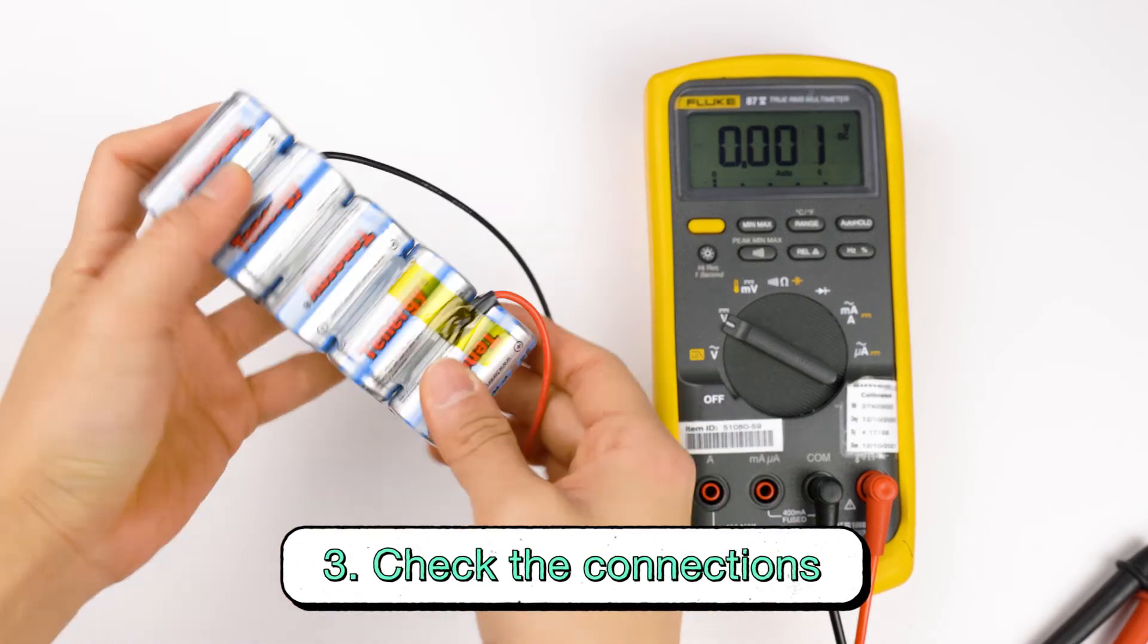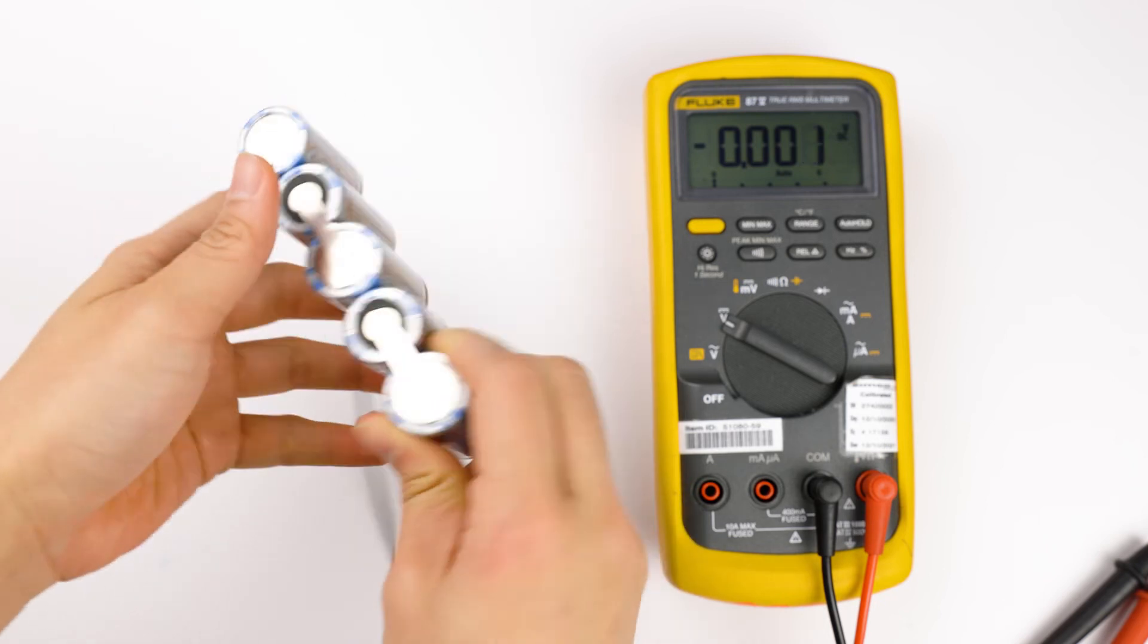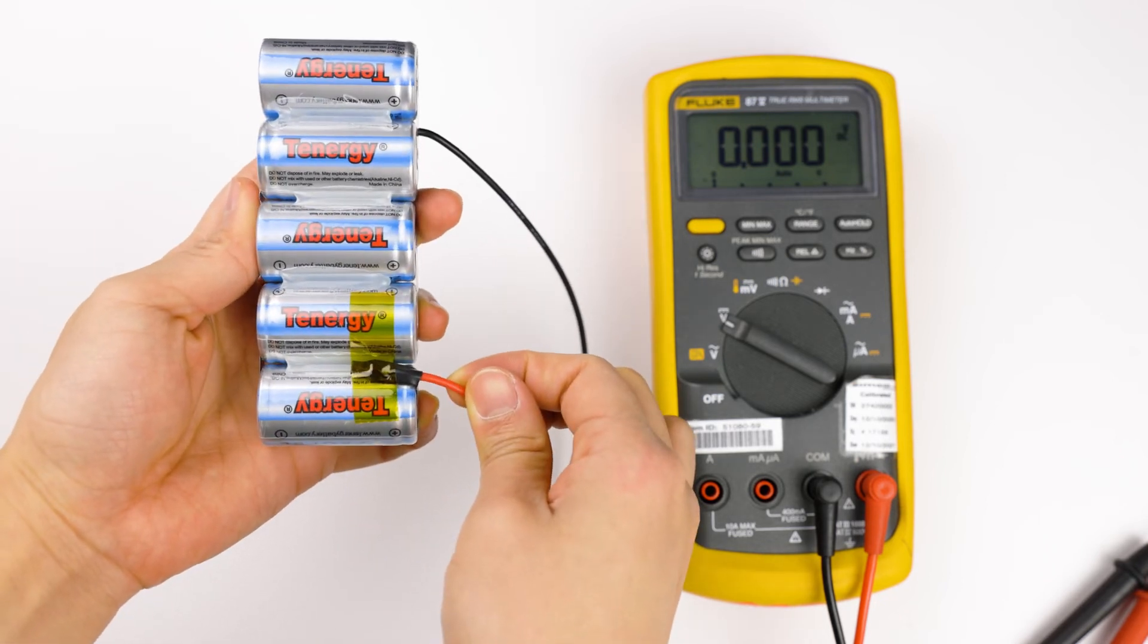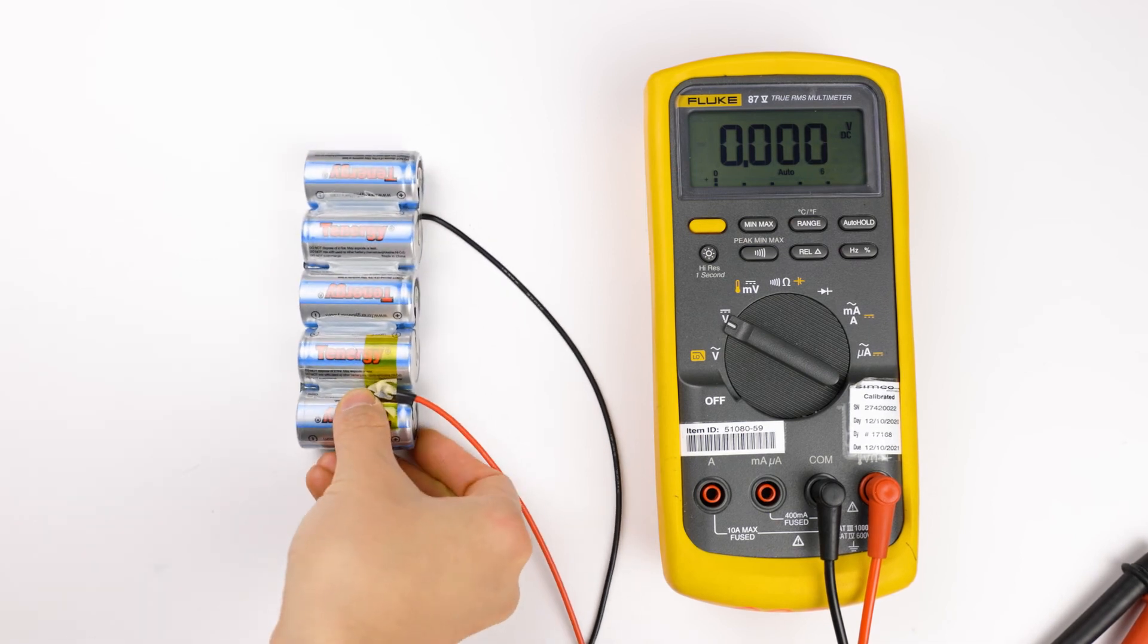But if the cells are in good shape, then the problem may lie among the connection points between the cells, between the pack and the connector, or between the PCB, the cells, and the connector if the battery pack has a PCB. The connection can be loose or incorrectly wired.